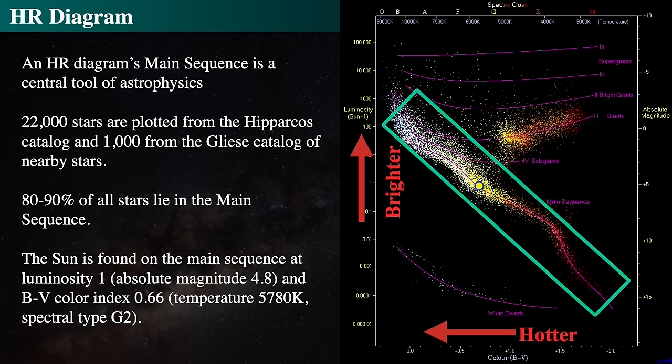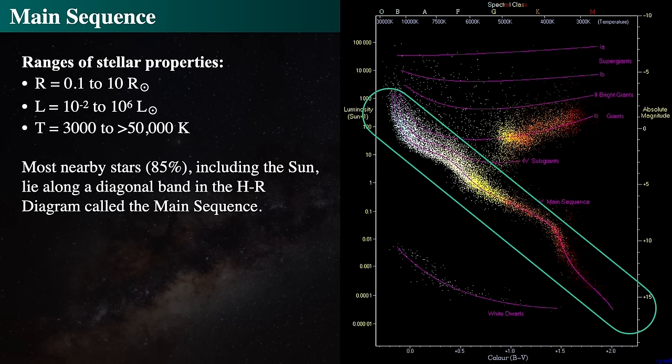Luminosity can be derived from the absolute magnitude. Between 80 and 90% of stars, including the Sun, lie on a diagonal band called the main sequence. Along the main sequence, luminosities range from about 1% that of the Sun to about a million times the Sun. The temperature range is from about 3,000 K up to over 50,000 K. Radii along the main sequence range from about one-tenth the Sun's radius to about 10 times the Sun's radius. Small, cool, dim stars are at the lower right; large, hot, luminous stars are at the upper left.